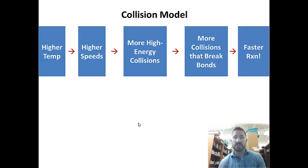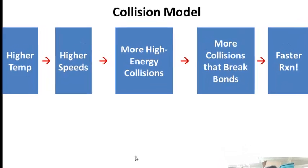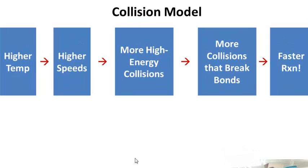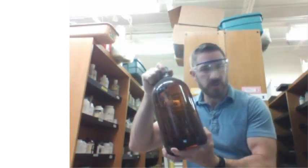The collision model, a couple things about it. And we're going to finish with this. What makes the reactions go faster? If you have higher temperatures, there's higher speeds, there's more high energy collisions, and there's more collisions that actually break bonds. And so you have a faster reaction. That's the collision model. I love chemistry.